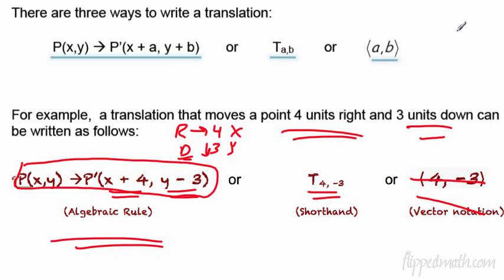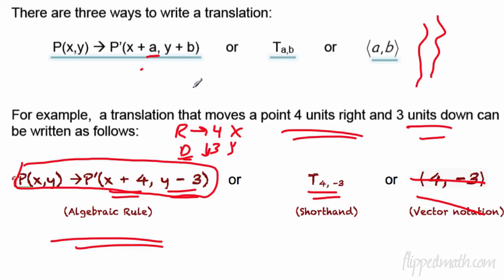For generalized rules: the point (x, y) maps to (x + a, y + b), where a and b can be negative. If a is negative, you move left; if b is negative, you move down. For example, to move down three, use b = −3. Don't get caught up in the generalized form — as long as you can apply it with real numbers, you'll be fine.